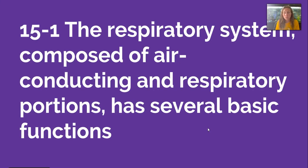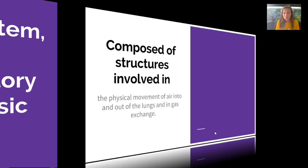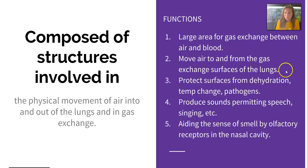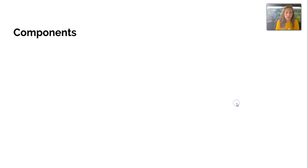In 15-1, we're going to talk about the two different portions of the respiratory system: the air-conducting and respiratory portions. There are five main functions: providing a large area for gas exchange, moving air to and from the gas exchange surfaces like the alveoli, protecting surfaces from dehydration, temperature change, and pathogens, producing sounds permitting speech and singing, and aiding in the sense of smell through olfactory receptors in the nasal cavity.